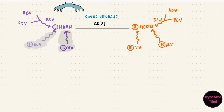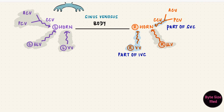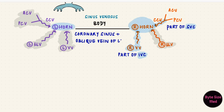The ones on the left regress — at least the portion close to the heart regresses. On the right, the umbilical vein regresses. The right vitelline vein forms part of the inferior vena cava, and the right common cardinal vein forms part of the superior vena cava. The right horn enlarges, while the left horn remains as the coronary sinus and the oblique vein of the left atrium.